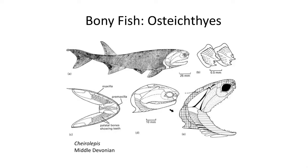The skull is composed of dermal plates, as well as body scales that are overlapping with a chain-mail-like articulation.